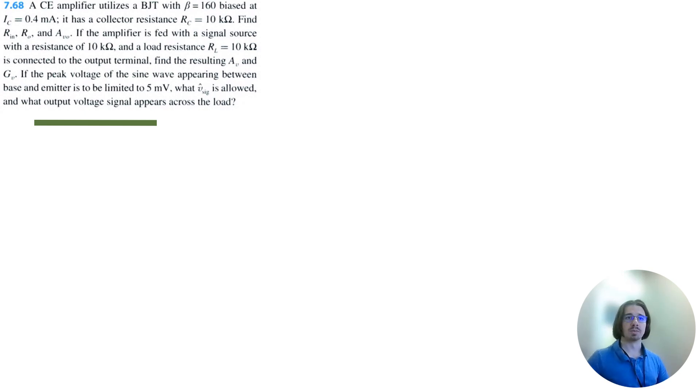Let's solve problem 7.68 from Microelectronics Circuits 8th edition by Sedra and Smith. We have a common emitter amplifier utilizing a BJT with beta equal to 160, biased at a collector current of 0.4 milliamps.